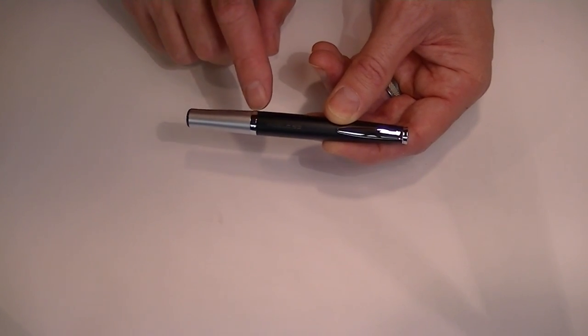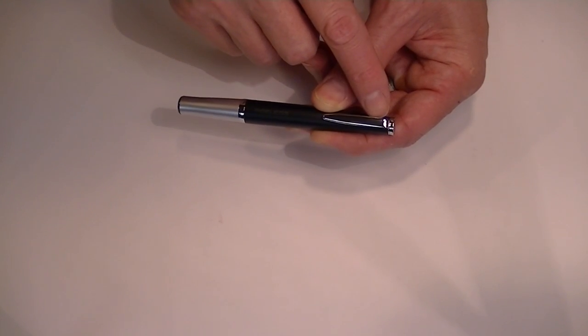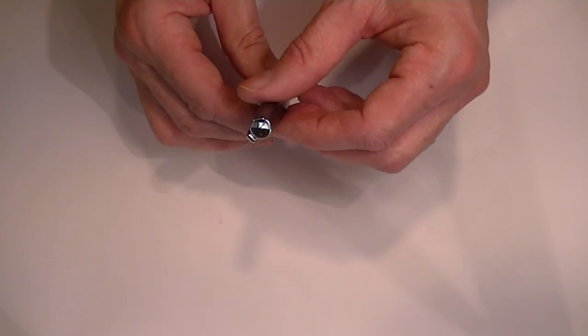The Pilot Ageless Future comes with chrome accents on the ring and on the clip. It also has a chrome top to the pen.